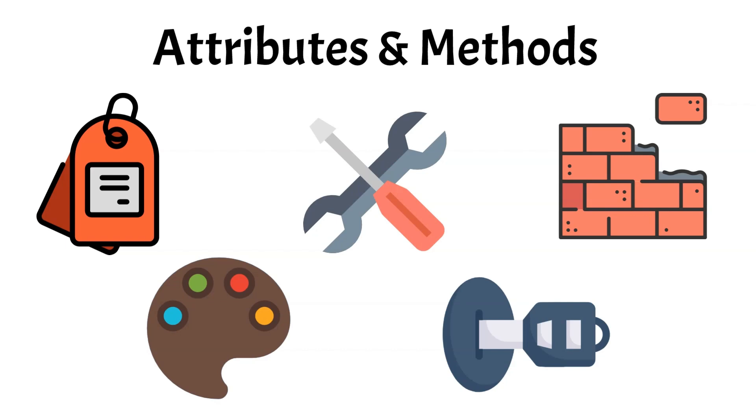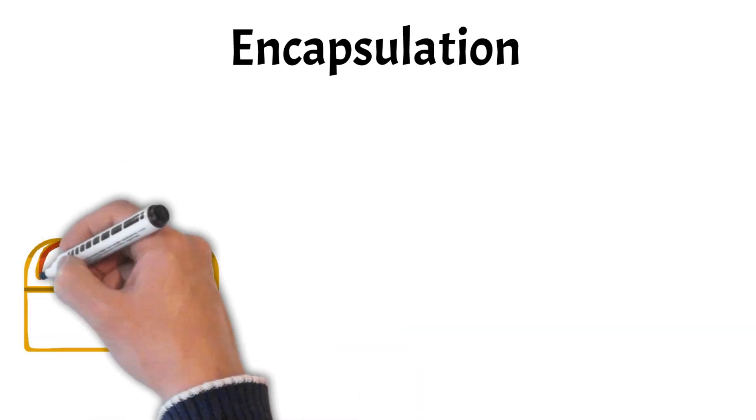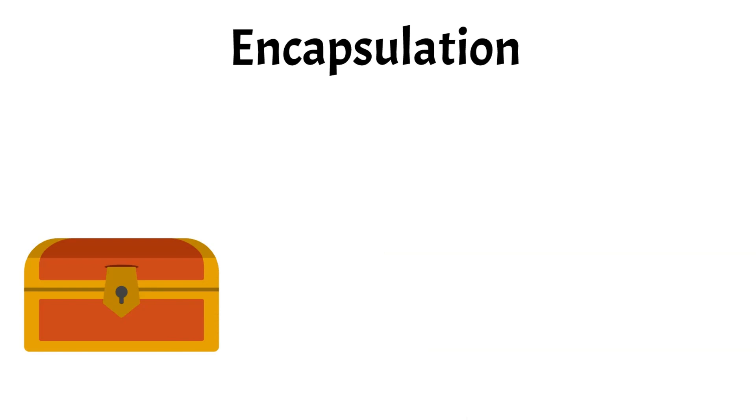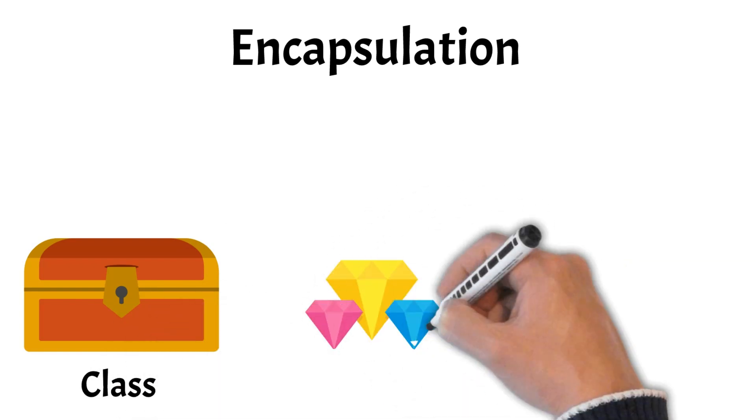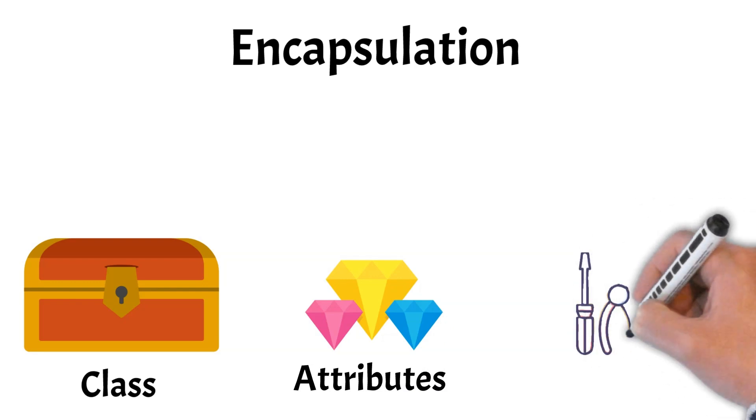Moving on to a more complex but crucial concept, encapsulation. Encapsulation in OOP is like storing items in a treasure chest with a lock. Imagine a treasure chest as a class in programming. Inside the chest are valuable items, attributes, and tools to handle them, methods.